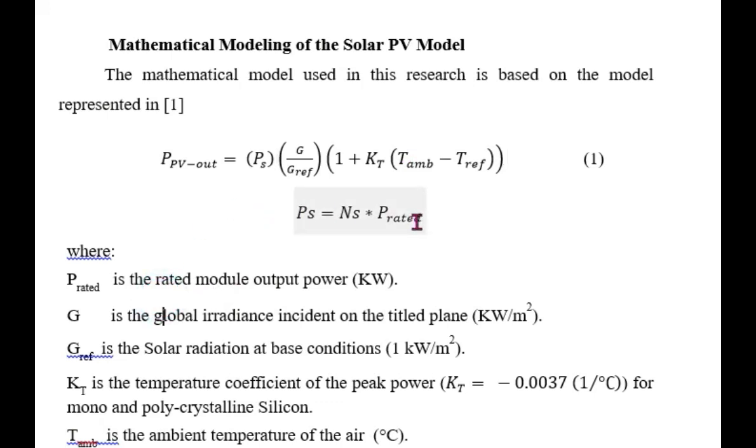P is equal to Ns into P rated. Ns is the number of solar panels, that will be selected by the optimization algorithm. And P rated is the rated power of one solar module. In our case, it's one kilowatt. Number of solar panels will be selected by the optimization algorithm, so that the overall cost will be smaller, or the levelized cost of energy will be less.